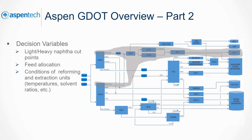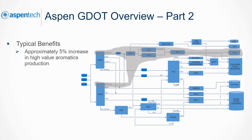GDOT achieves these objectives by adjusting light and heavy naphtha cut points, feed allocation between parallel units, and the operating conditions of reforming and extraction units. Using GDOT to optimize aromatic production can increase high-value aromatic production by 5%.